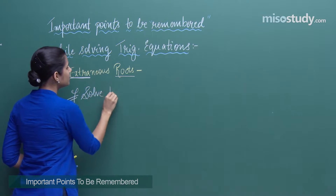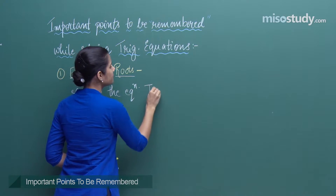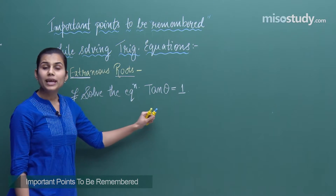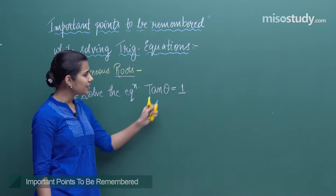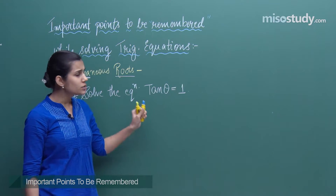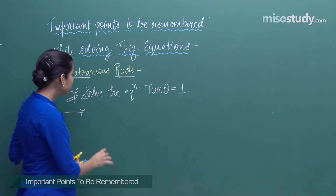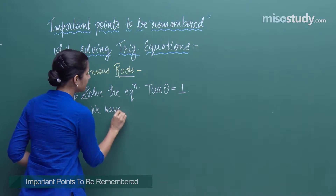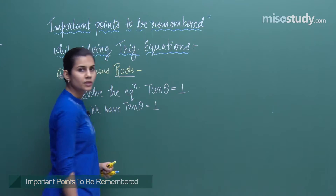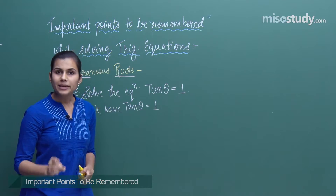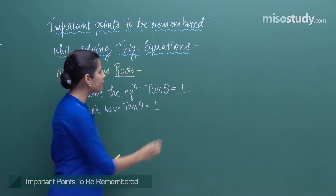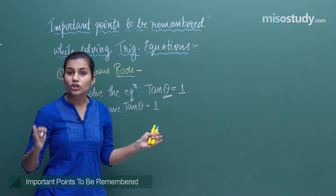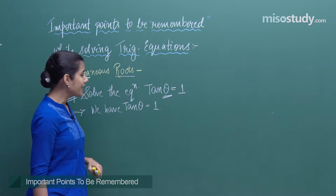Let me write an example. Suppose I say: solve the trigonometric equation tan θ = 1. Solving this means finding the set of all values of the unknown angle θ which, when plugged into the equation, gives the right-hand side as 1. Those θ values will be the solutions, and that is what we need to find.